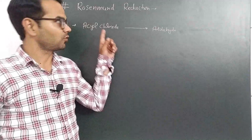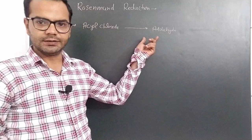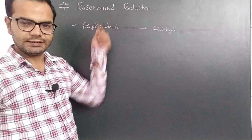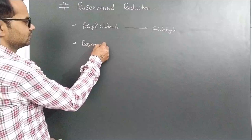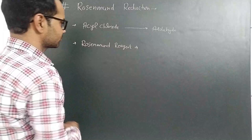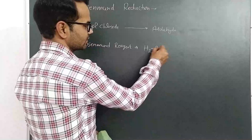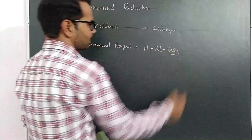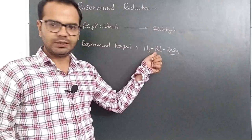Rosenmund Reduction involves the conversion of acyl chloride to the corresponding aldehyde. The reduction involves a reagent called Rosenmund reagent. Point number two: what is Rosenmund reagent? It is hydrogen adsorbed on the surface of palladium metal, with barium sulfate.